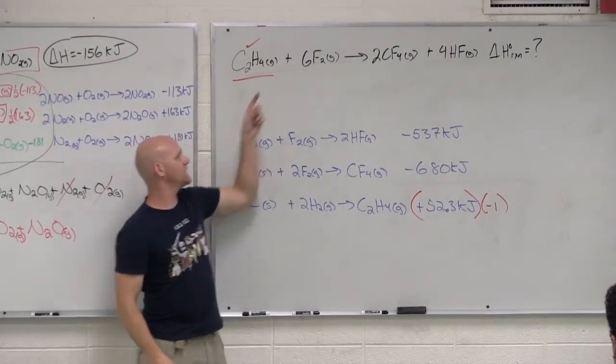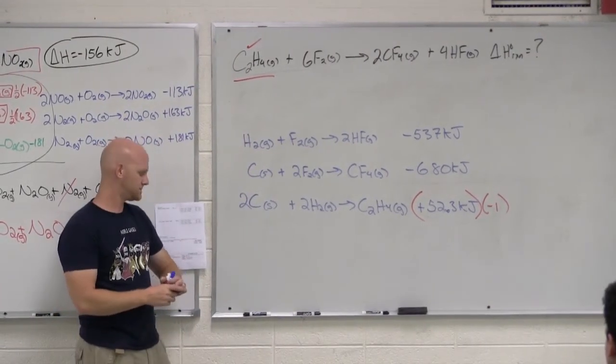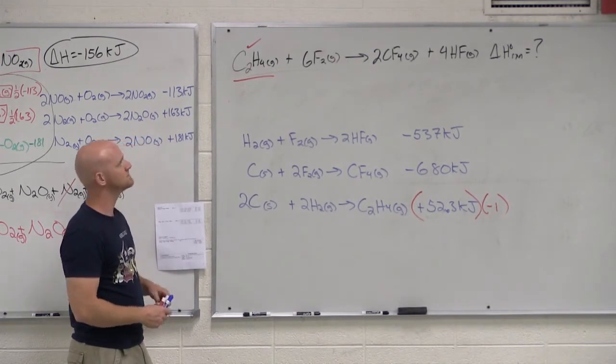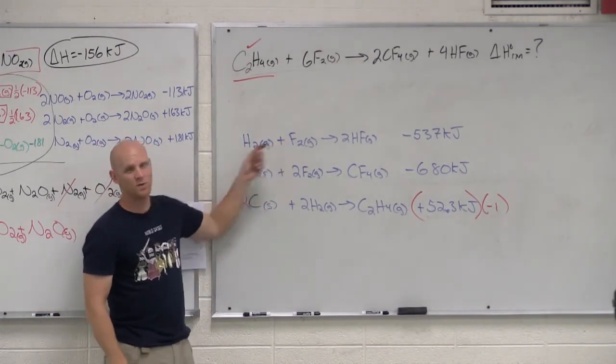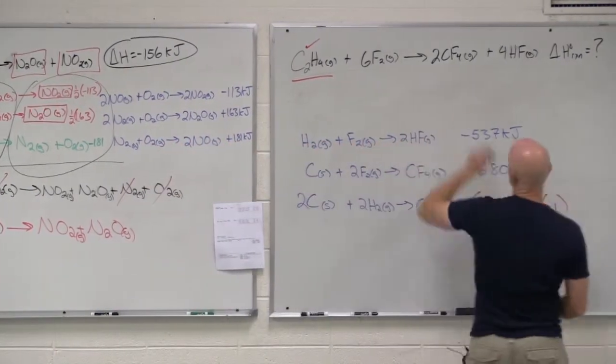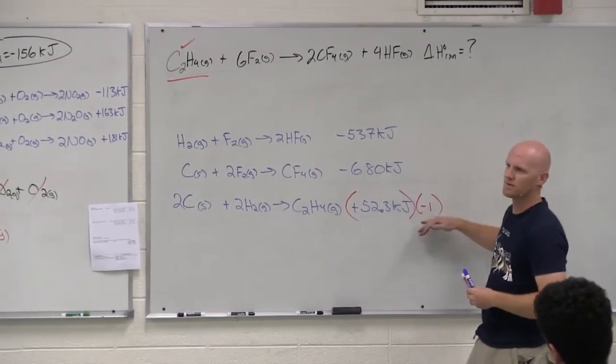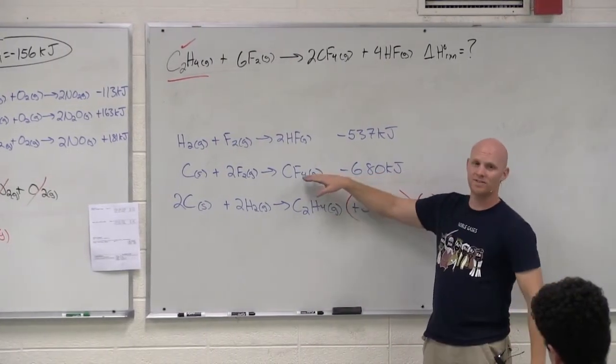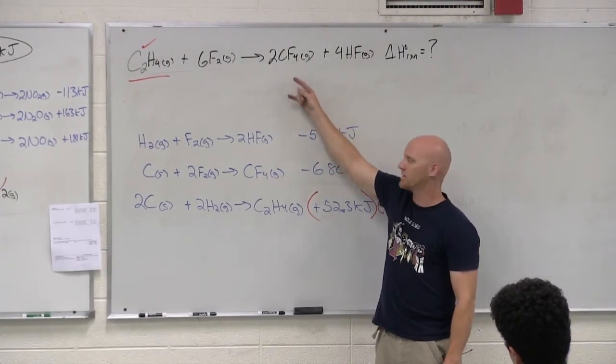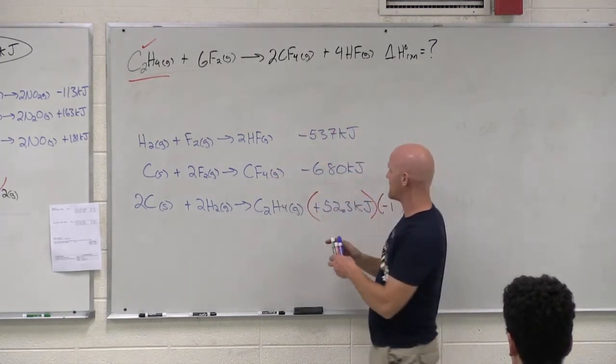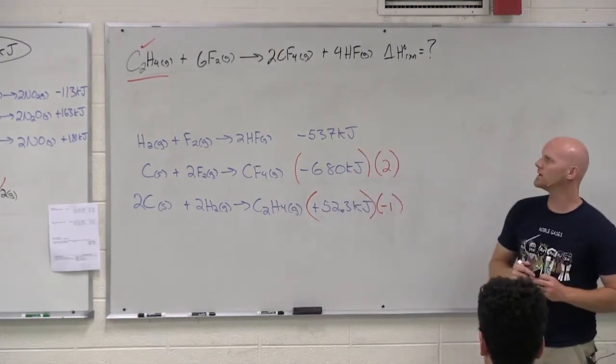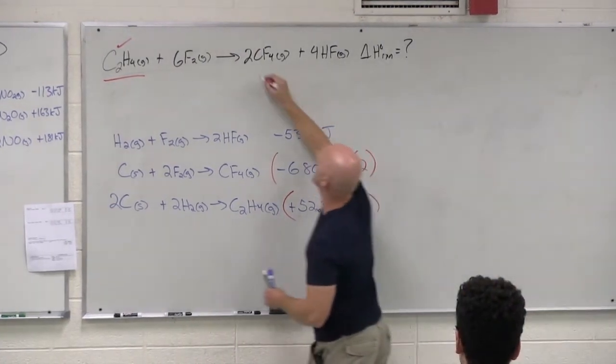Does F2 show up in exactly one of these reactions? It shows up in two of them. So what do I do? Leave it until the end. Skip it. Move on to CF4. Does CF4 show up in exactly one of these reactions? Yeah. The middle one. Does it show up exactly how I need it to? No. How do I make it show up exactly how I need it to? It's on the product side already, but I need two moles. So we'll double the whole thing. And if I double the whole thing, that would double the delta H value as well. And that takes care of the CF4.